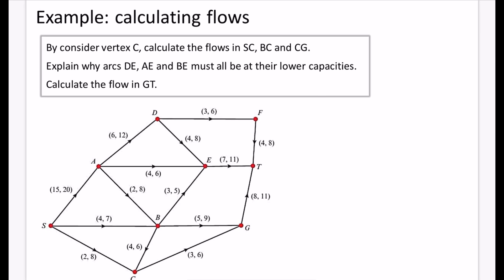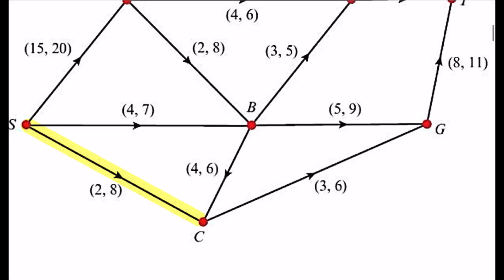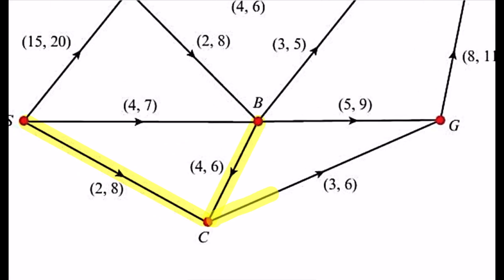By considering vertex C, we calculate the flows in S→C, B→C, and C→G. Flowing into C we have capacities (2, 8) and (4, 6); flowing out is (3, 6). Only six can flow out maximum, which means the arcs flowing in must be at their minimums — two and four — giving exactly six flowing in, so C→G must be at its maximum of six.